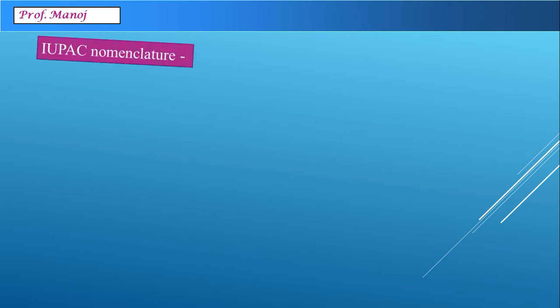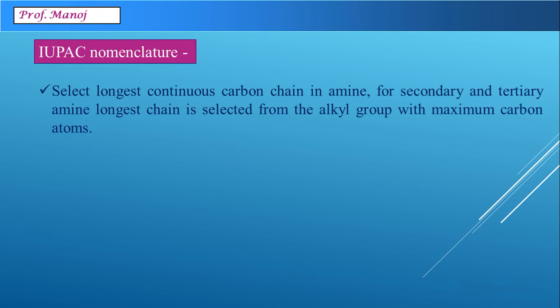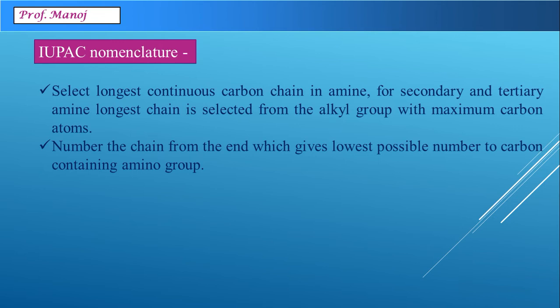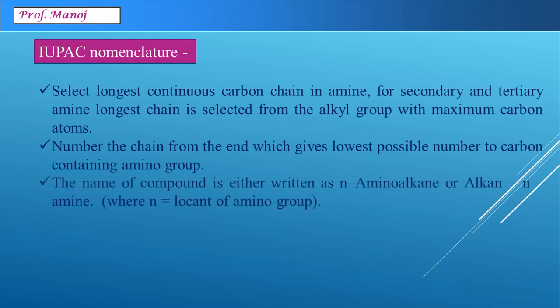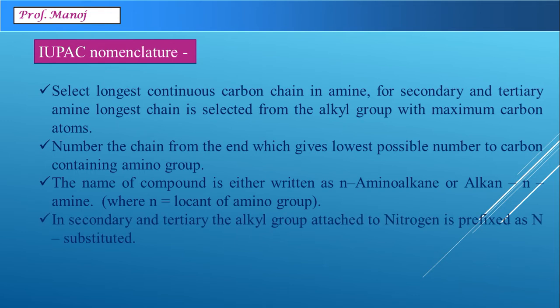Let us come to IUPAC nomenclature of amines. The basic rules are: select the longest continuous chain of carbon atoms. For secondary and tertiary amines, the longest chain is selected from the alkyl group with maximum carbon atoms. The numbering of the chain is given from that end which is nearest to the amine group. The name is written as N-amino-alkane or alkan-N-amine, where N is the locant. For secondary and tertiary amines, the prefix capital N is written for groups attached to nitrogen. For aromatic amines, the -e of arene is replaced with the word amine.